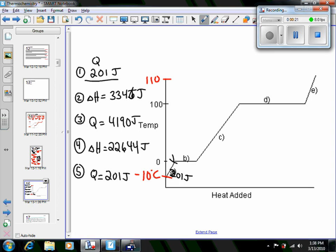Then going from ice to water was 3,346 joules, then the heating of water all the way from 0 to 100 degrees was 4,190 joules. The most energy in the entire thing was changing the water to steam, that was 22,644 joules.